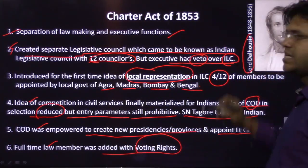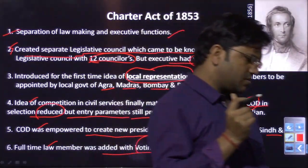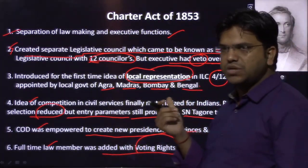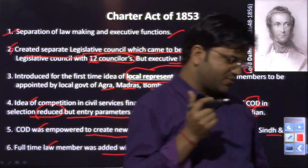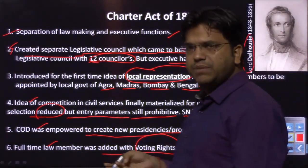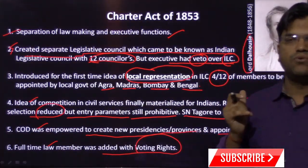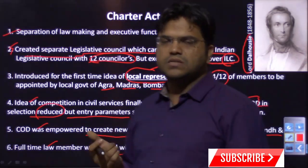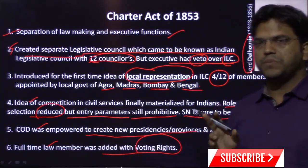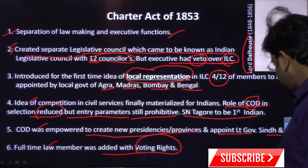This man, Lord Dalhousie — his role is often asked about. He is known for the Doctrine of Lapse, which led to annexations and ultimately culminated in the 1857 War. But he was also a reformer — railways, postal stamps, telegraph — in many things he is known as a reformer. When you study part of history covering Governor Generals, I suggest you read his role extensively, even though it is not strictly within the scope of polity.